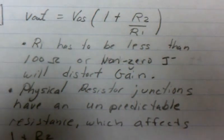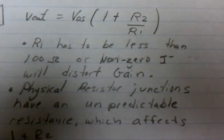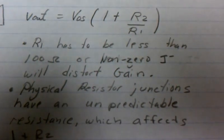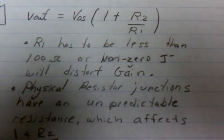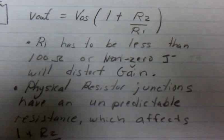We have to be careful here because R1 has to be less than about 100 ohms or non-zero currents going through the negative terminal of the op amp will distort the gain.